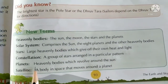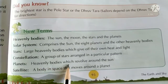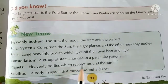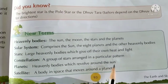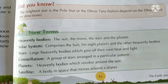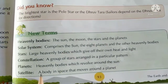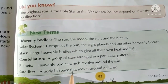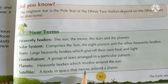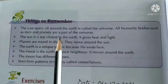Planets are heavenly bodies which revolve around the sun. A satellite is a body in space that moves around a planet.